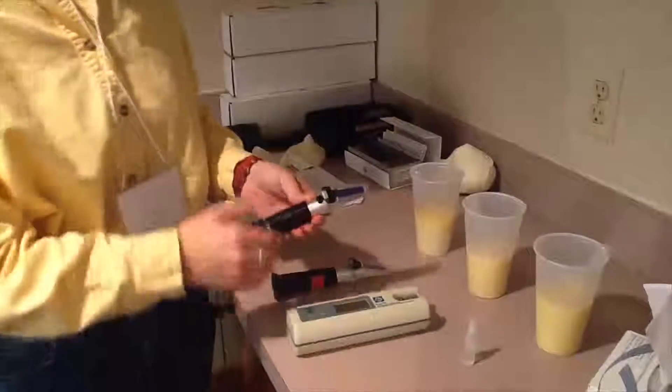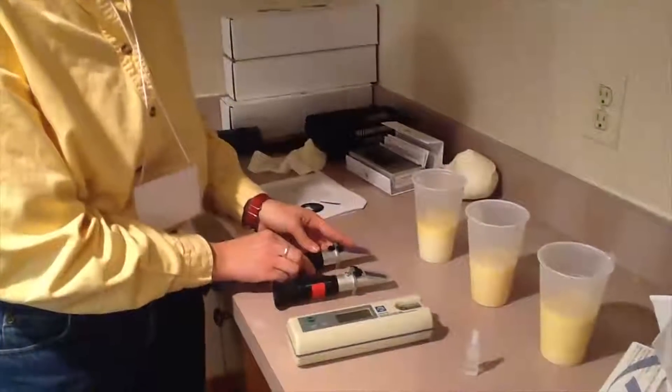Another tool that we are using today is the refractometer. You can have a visual or you can have a digital. Obviously the digital is a little more expensive, but they both will give you the same number. They are based on a BRICS reading, so what they will read is how the colostrum is bending the light, whereas the colostrometer measures density.